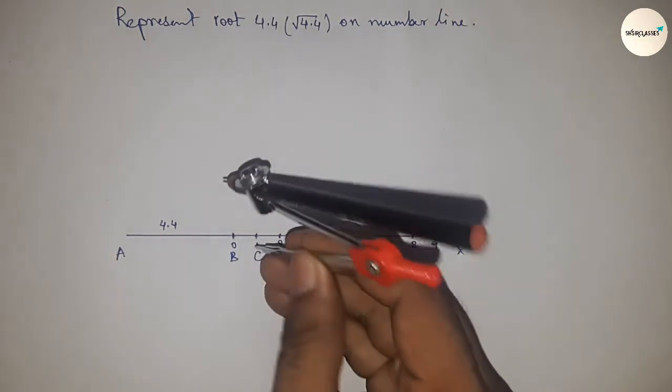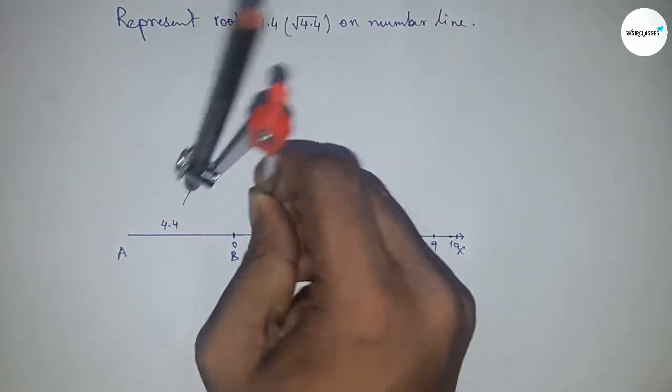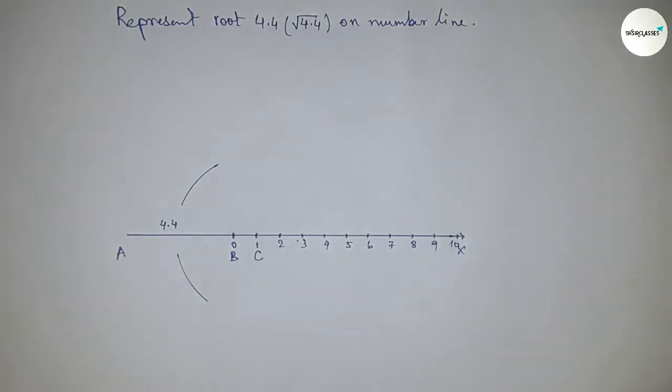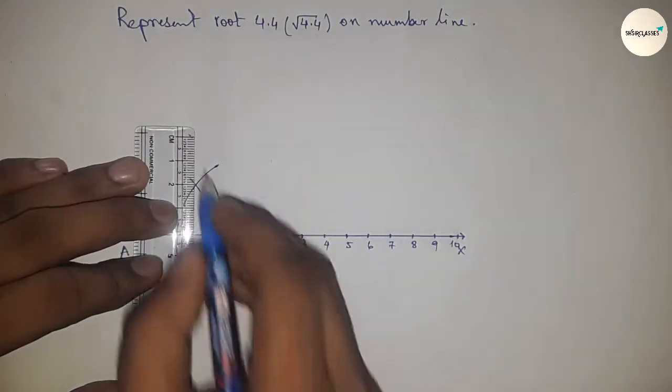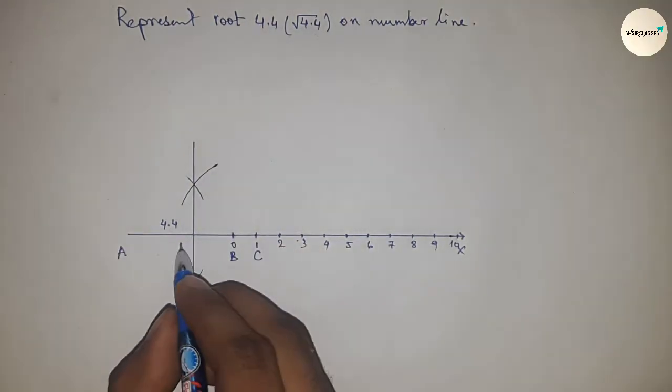Now taking C point. Next, having to bisect the line AC, so taking greater than half of AC and drawing arcs with same length and putting in the compass here and drawing arcs. Next, joining this which meet at a point O.